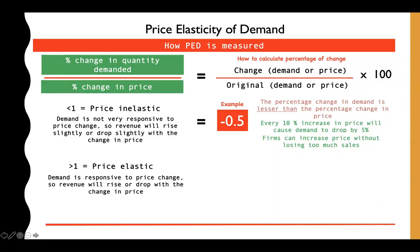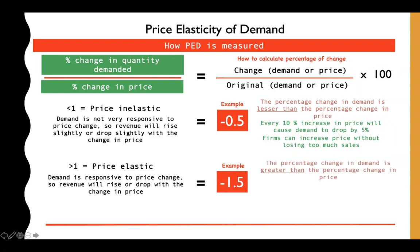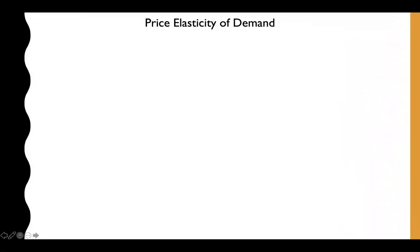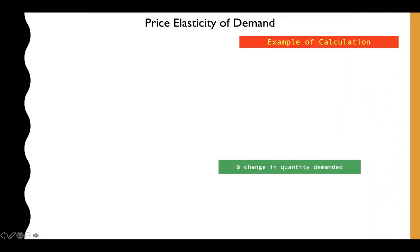If demand is elastic, you get a result of more than one, meaning demand is very responsive to change. People react strongly when you increase price — they may choose not to buy as much. The percentage change in demand is greater than the percentage change in price. This is generally not ideal for firms, who may choose to lower prices to continue making money.